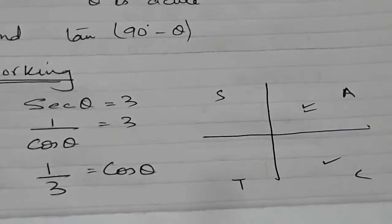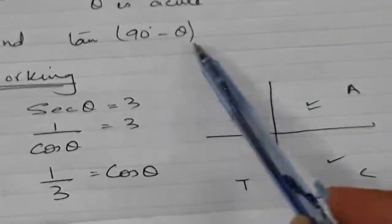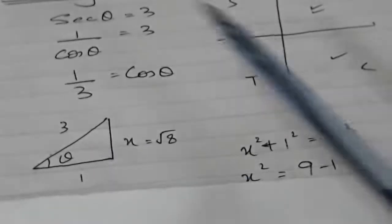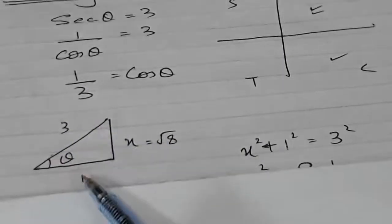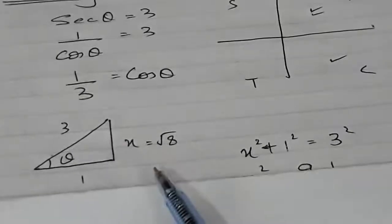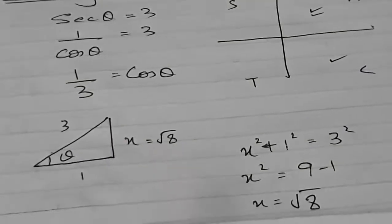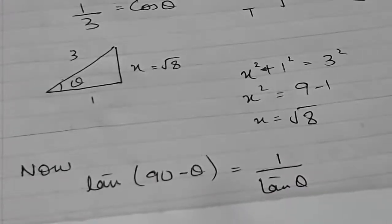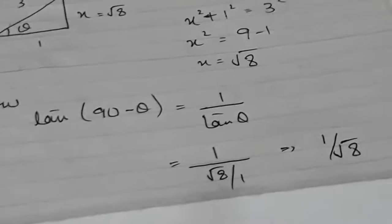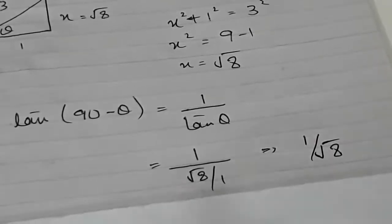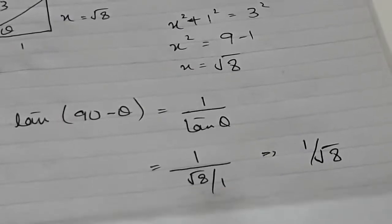We need to find tan(90° − θ). I will draw a triangle; the hint gives cos θ = 1/3, which means adjacent over hypotenuse. By Pythagoras, the opposite side is √8. To find tan(90° − θ), I use the identity tan(90° − θ) = 1/tan θ. Since tan θ = √8/1, we get tan(90° − θ) = 1/√8.